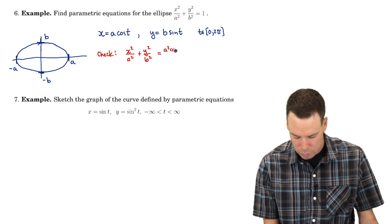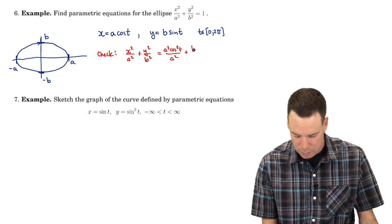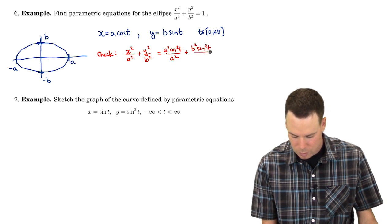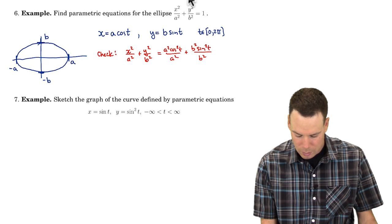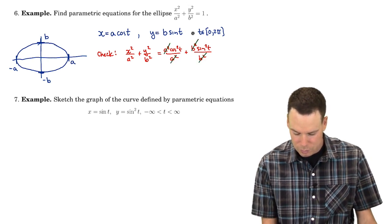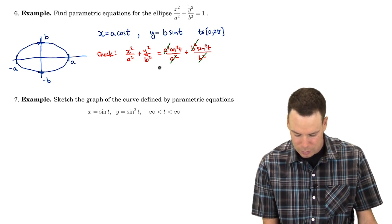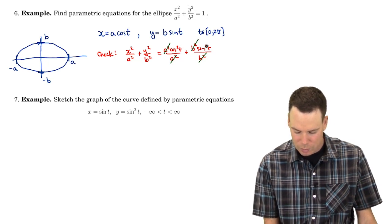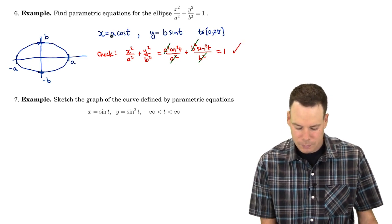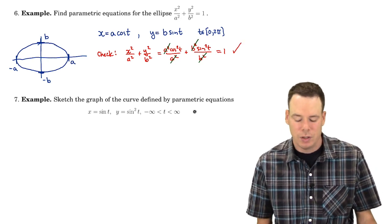Well that's a squared cos squared t over a squared and that's added to y squared which is b squared sine squared t over b squared, and that's great because those b squareds and the a squareds cancel. And so this becomes just cos squared plus sine squared which is 1 and so it checks out. So this does give me a parametrization of the ellipse.